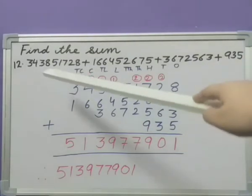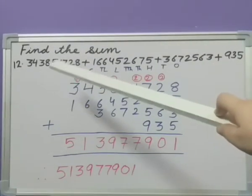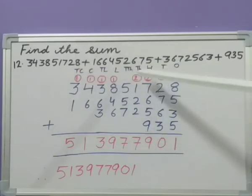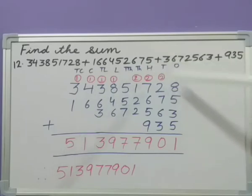And if I read these numbers, the number is 34385172 plus 16645267 plus 3672563 plus 935. Why am I reading this? Because I don't know their place values. So how can I read them? So while arranging them we need to find out their place values. So we will start from here. Ones, tens, hundreds, thousands, ten thousands, lakhs, ten lakhs, crores, ten crores.